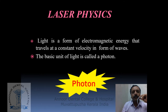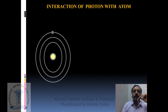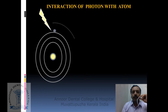Now let us discuss some basics of laser physics, that is how a laser beam is produced. Light is a form of electromagnetic energy that travels at a constant velocity in the form of waves. The basic unit of light is called a photon, which means a particle of light. When an atom is struck by a photon, there is an energy transfer causing an increase in the energy of the atom. This process is termed as absorption. The photon then ceases to exist and the electron in the terminal shell, known as the valence electron, is pumped from the ground state to a higher energy level. That is, the atom is now in an excited state.